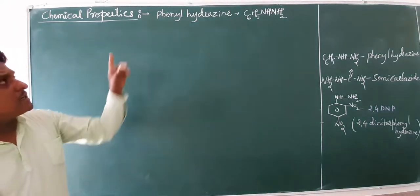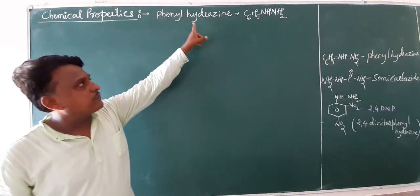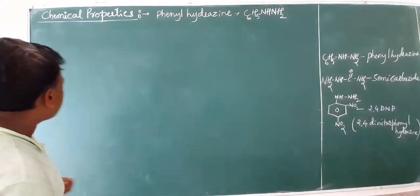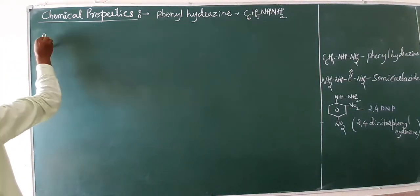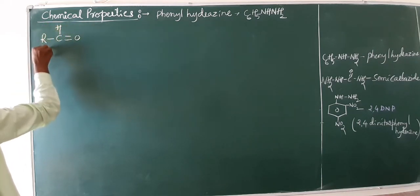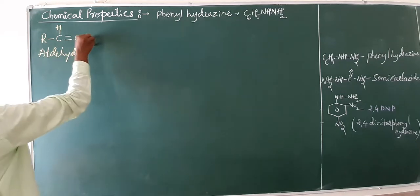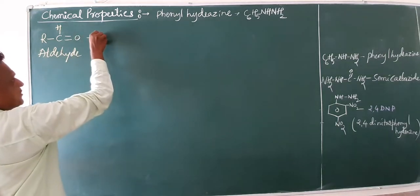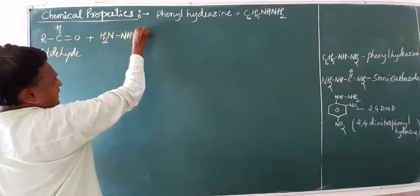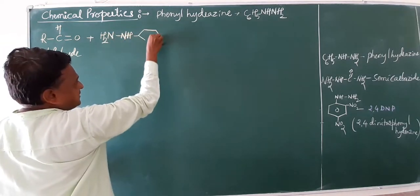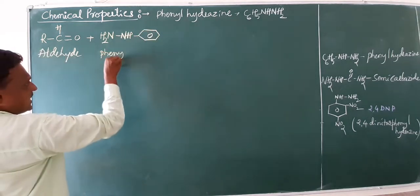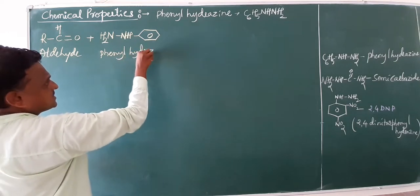Let's move on to the next part: condensation with phenyl hydrazine. The formula is C6H5-NH-NH2. What happens when this phenyl hydrazine is condensed with aldehyde? The name of this compound is phenyl hydrazine.